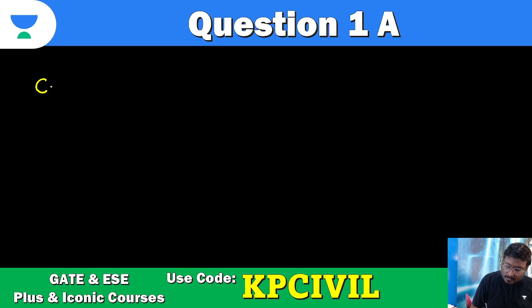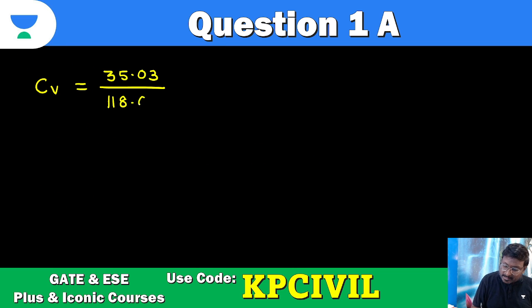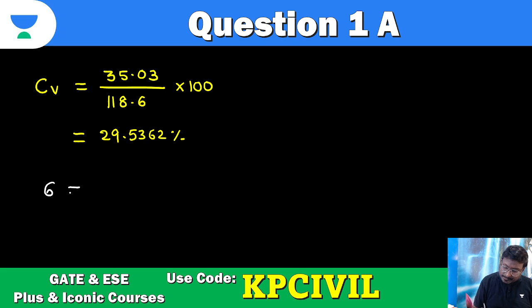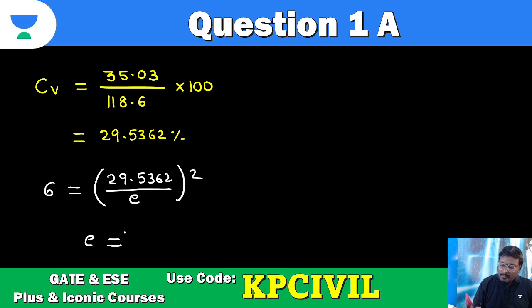Now calculate the coefficient of variation. CV equals standard deviation divided by average precipitation, multiplied by 100. That is 35.03 divided by 118.6, multiplied by 100, giving CV = 29.5362%.